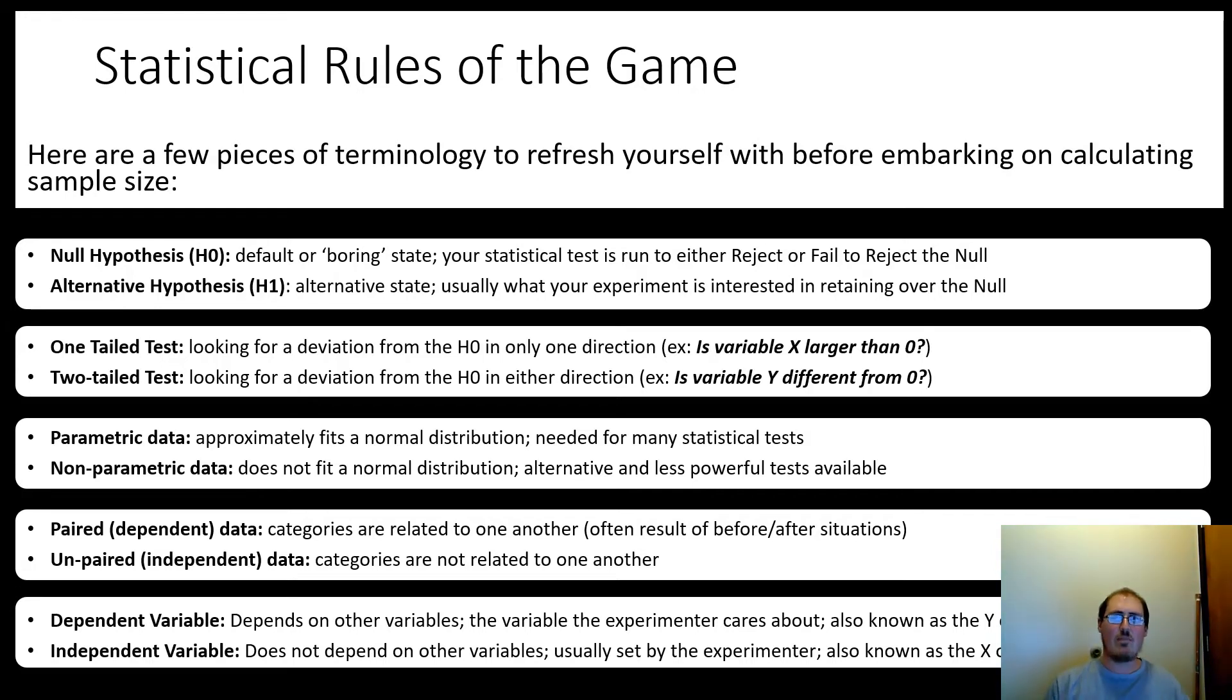Next, we have parametric versus non-parametric data. So parametric data, also known as normally distributed data, approximately fits a normal distribution. Sometimes you might have seen this thing called like the bell curve. That's a normal distribution. And this tidiness or normalness of data is a lot of times an assumption for a lot of these tests.